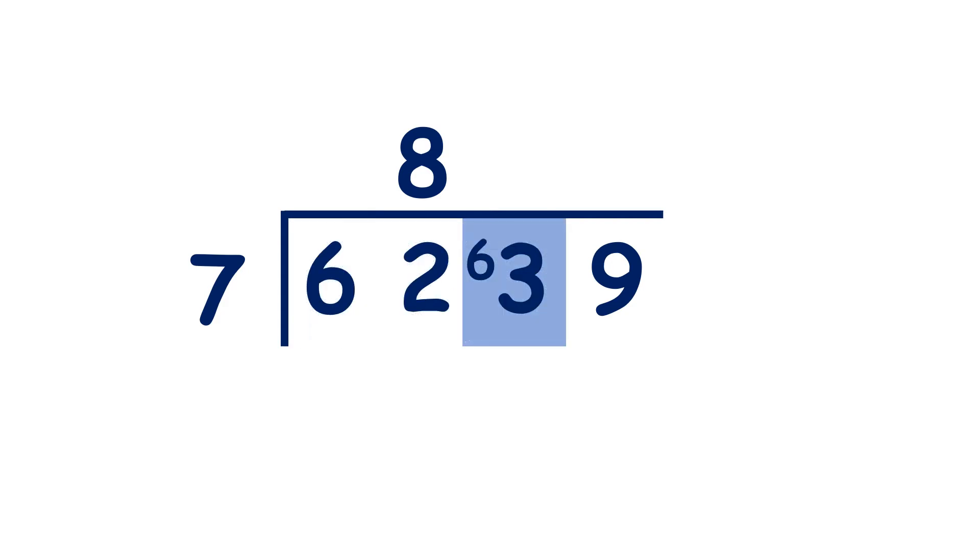63 divided by 7 is 9 exactly, and then 9 divided by 7 is 1, remainder 2.